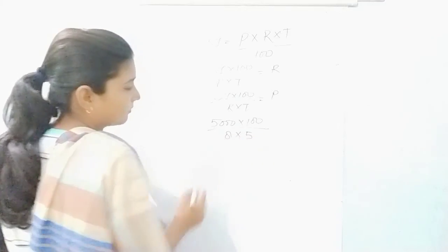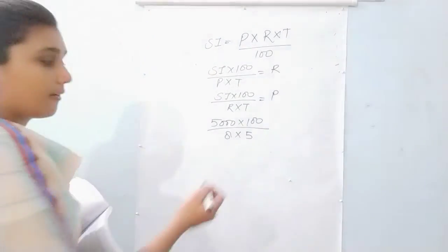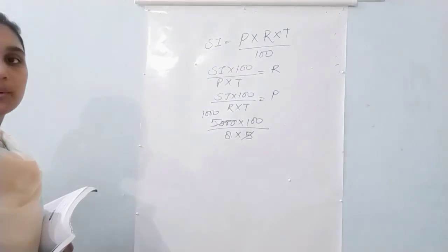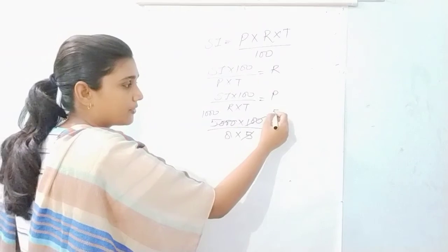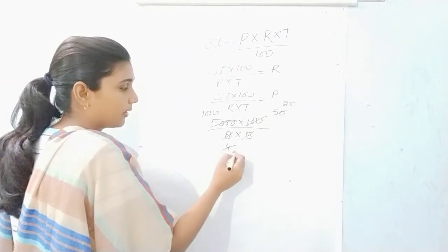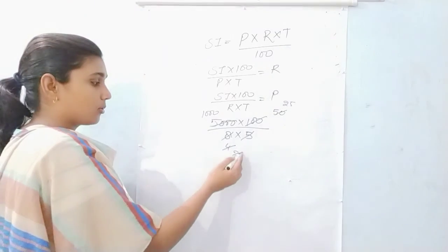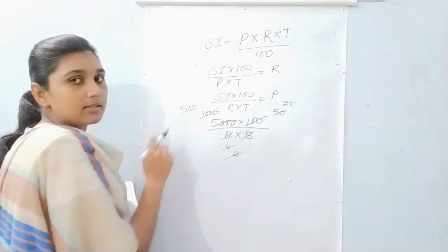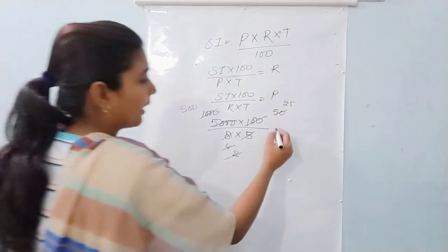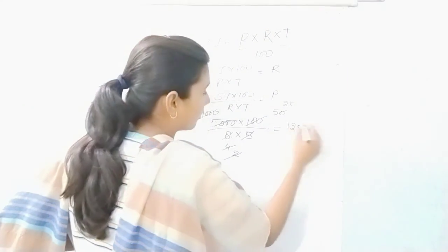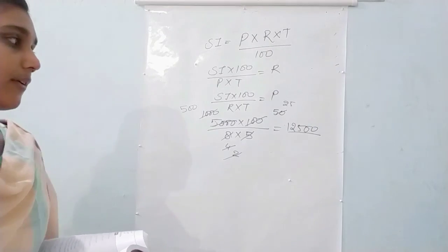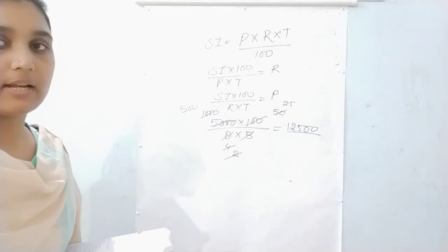So putting values: P = 5000 × 100 upon 8 × 5. 5 se 100 cut hoga to 1000 ho jaayega. Then 2 se cut karo: 1000 becomes 500, aur 8 becomes 4, phir 2 se dobara cut karo to 4 becomes 2 aur 500 becomes 25. So 25 multiplied by 500 — that will be 12,500. That will be your answer.